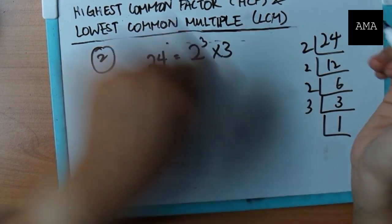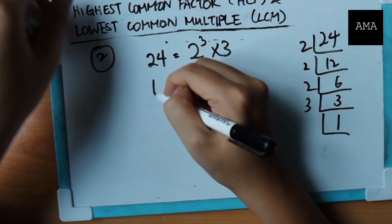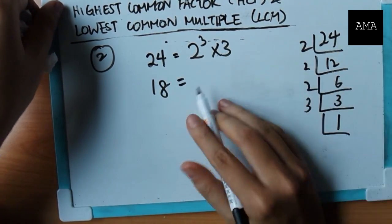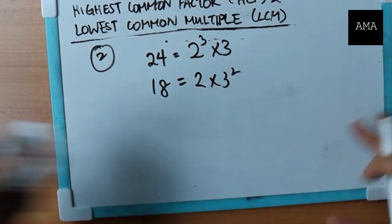60. Okay? I'll use a smaller number. Easier. 18 is 2 times 3 squared. Okay?